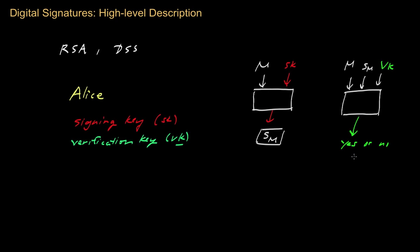The process of signing effectively binds the public verification key to Alice, because Alice is the one who published this verification key and told the whole world this is her verification key. Only she will be able to sign messages that will be considered valid with respect to that verification key. Because the message is now being bound to this public key, and if you think of the public key as an identifier for Alice, then you can think of digital signing as a process that basically binds an identity to an underlying message — giving us the mathematical analog of a traditional handwritten signature.